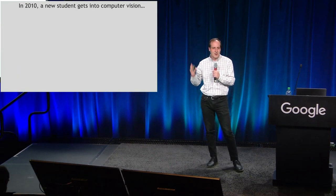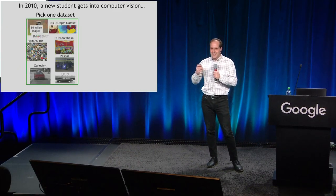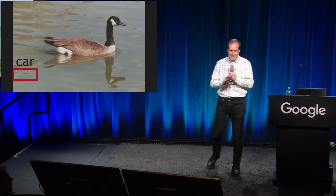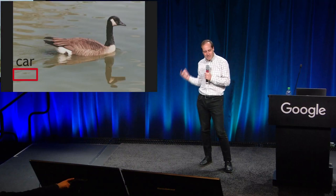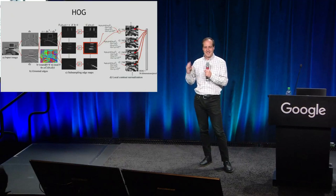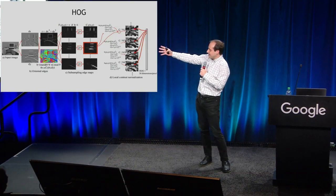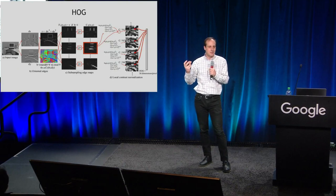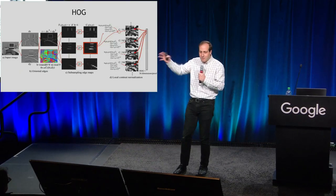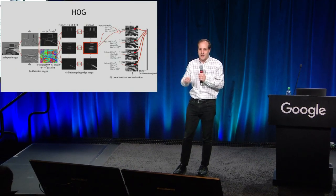Things haven't always been like this. A few years ago, a new student gets into computer vision, really excited, hears about all these models and datasets. He takes a dataset, picks a model, trains the algorithm, takes an image, runs the algorithm — and this is the output. This was the standard thing happening all the time. This was the HOG descriptor, the state of the art in computer vision not even 10 years ago.